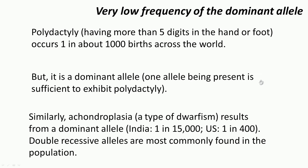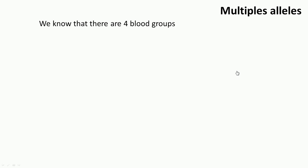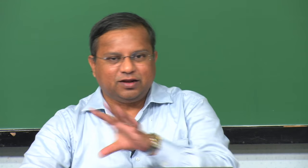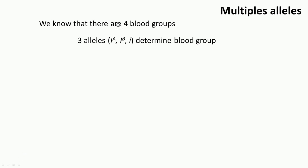We have already seen an example of Huntington's disease earlier. The next non-Mendelian aspect is that multiple alleles can determine a trait — not just two. For example, blood groups: we know there are four major blood groups — A, B, AB, and O. This is determined by three alleles: I^A, I^B, and small i.